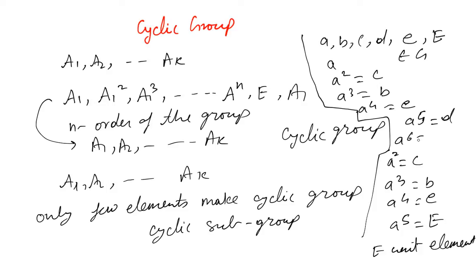And then we can say a⁶ equals e. So this is an example. So all the elements have been repeated here: a, b, c, d, e and the unit element.